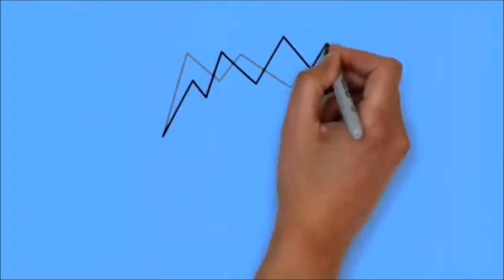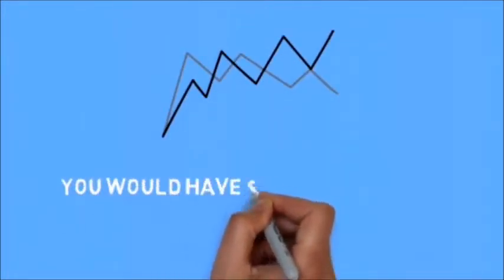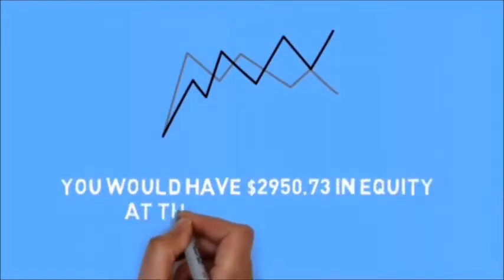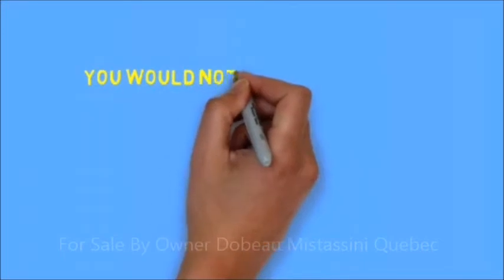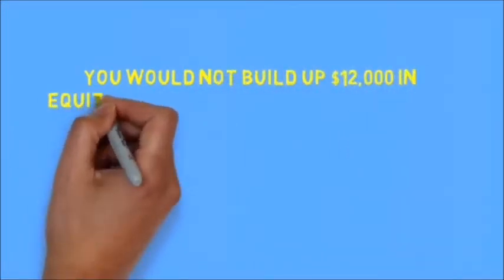If we were to disregard market price fluctuations and simply look at the charts for a standard 5%, 30-year fixed rate mortgage on a $200,000 home, you would have $2,950.73 in equity at the end of year one. You would not build up $12,000 in equity until the end of the 46th month.